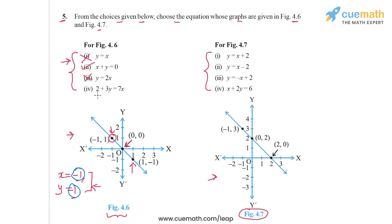The fourth one is 2 plus 3y equal to 7x. If we substitute y equal to 1 on the left side, we get 2 plus 3 or 5. And if we substitute x equal to minus 1 on the right side, we get minus 7. So this is also not satisfied. Therefore, the only equation satisfied by minus 1 comma 1 is x plus y equal to 0, and this will be the right choice.